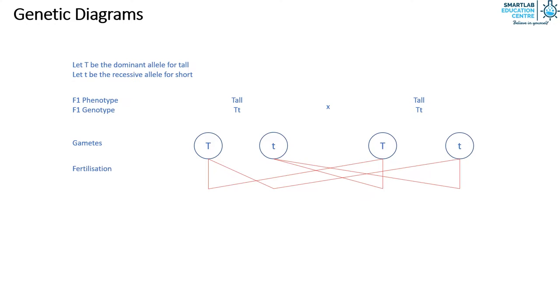As can be seen, there is one F2 offspring homozygous for tall, two offsprings heterozygous for tall, and one offspring homozygous for short. Therefore the phenotypic ratio is three tall to one short.